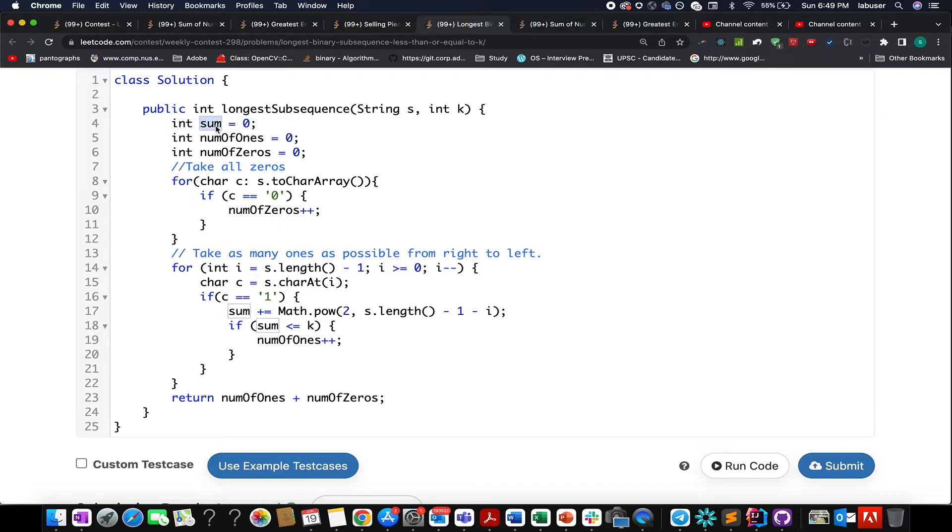Here I have created 3 variables: running sum, number of zeros, and number of ones. We count the number of zeros that exist in the input string S. With each zero instance, I increment the number of zeros variable. Now comes the question: how many ones can be taken into consideration?